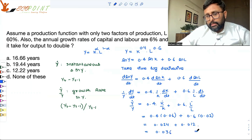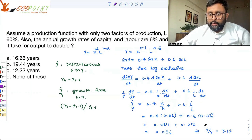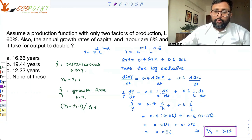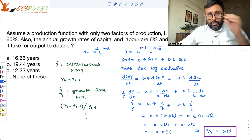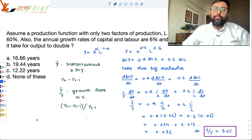No, sorry. 0.024 plus 0.012. So, this thing will come out to be 0.036. So, this is basically your Y dot by Y is nothing but 3.6%. How about that? 3.6%. So, now you know the growth rate of output.